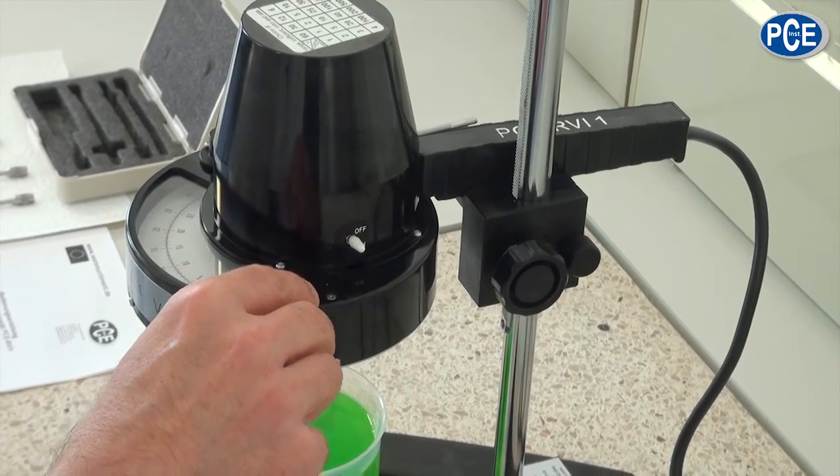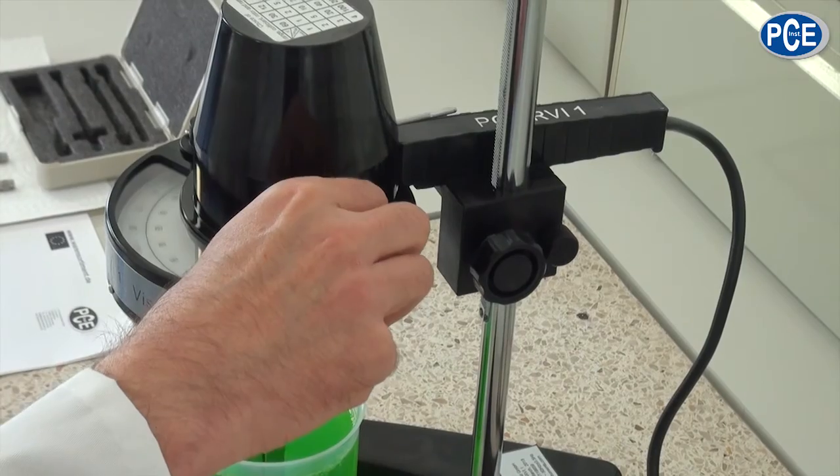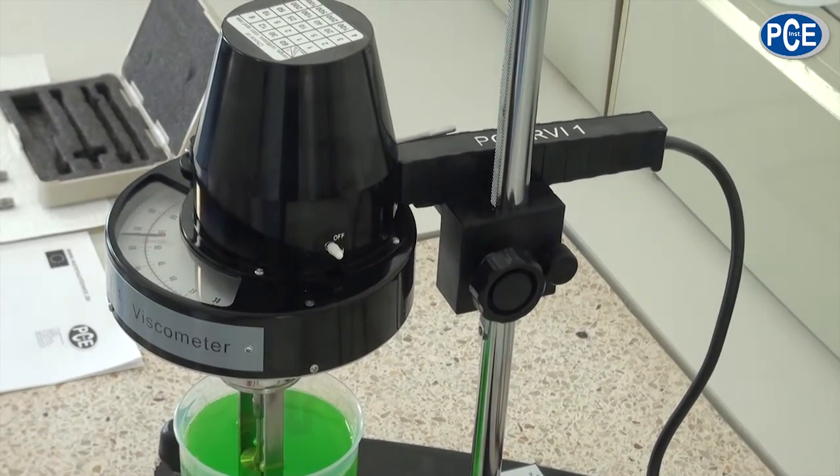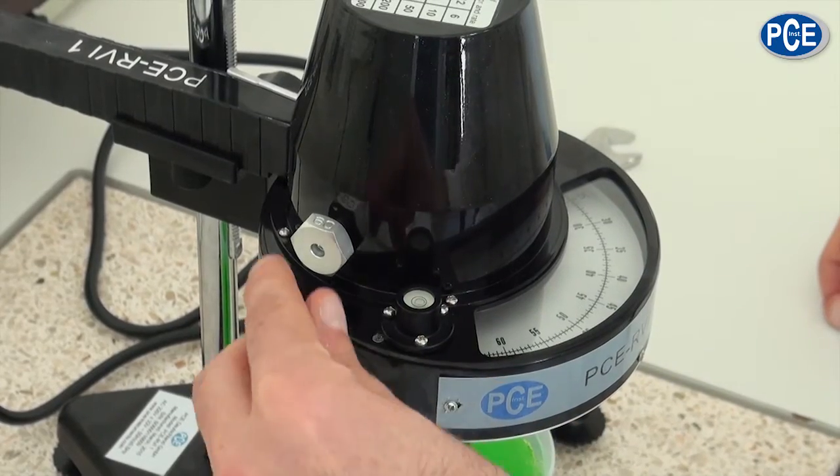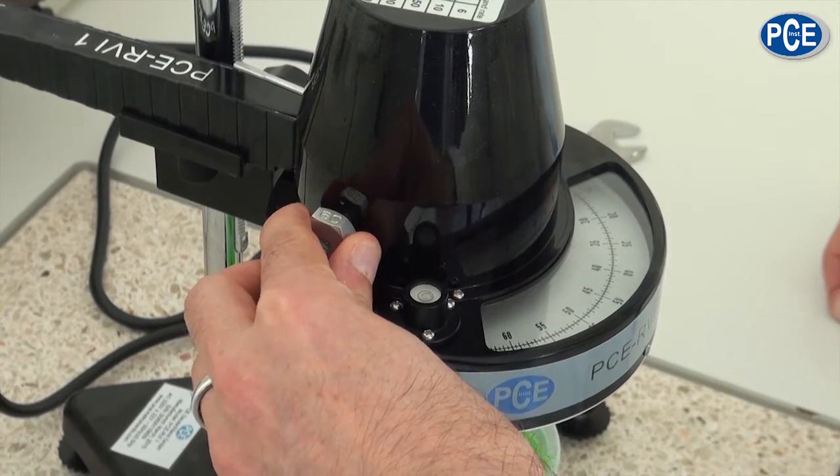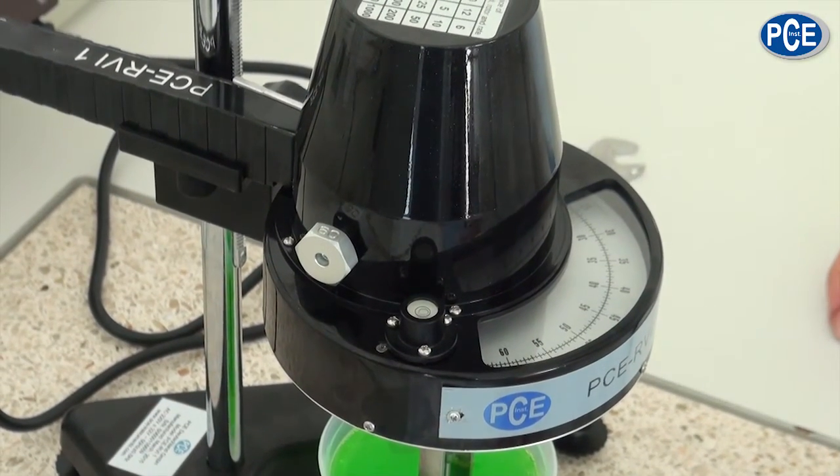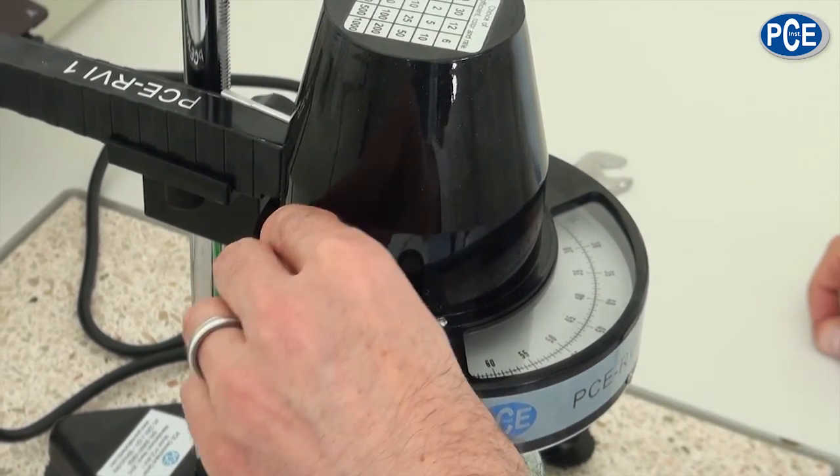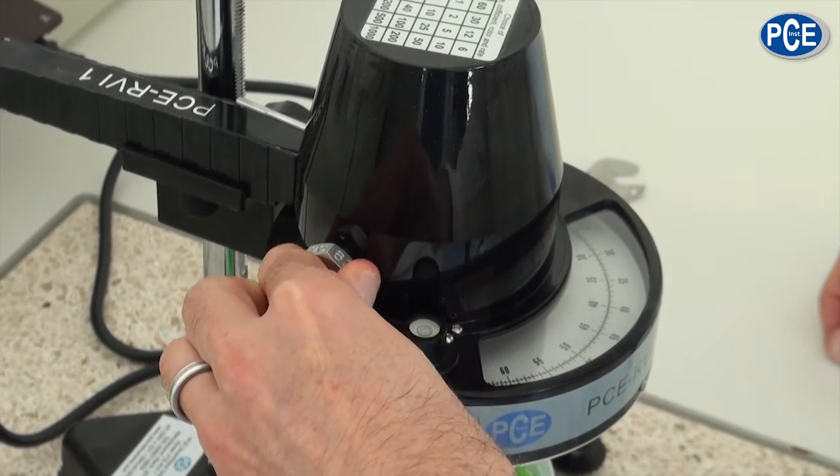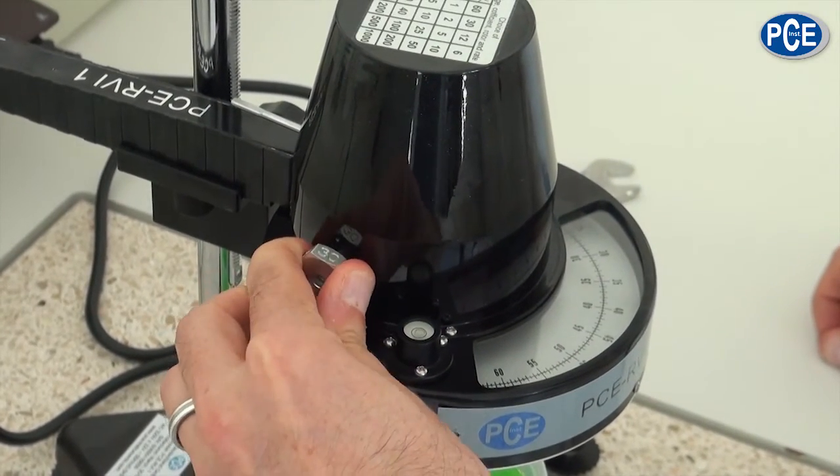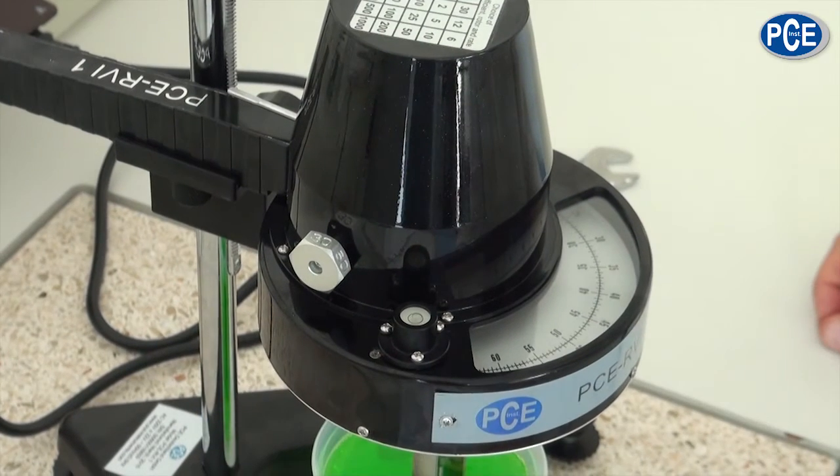I would like to show now the controls of the viscometer. On the right side is the on-off switch with the turning knob. On the left you set the rotation speed of the rotation body. Here for example 60 revs per minute, or here 30 revs per minute.